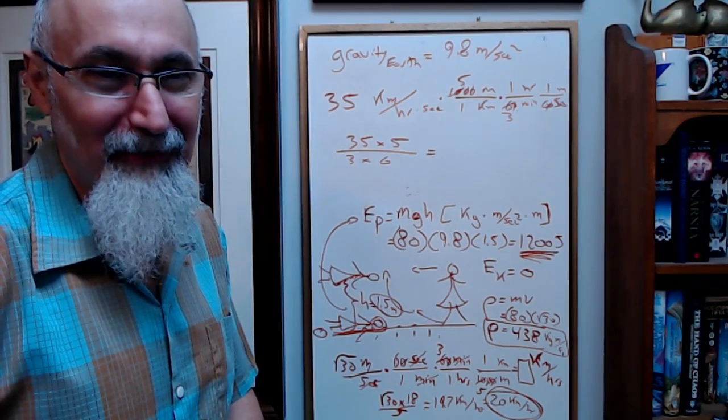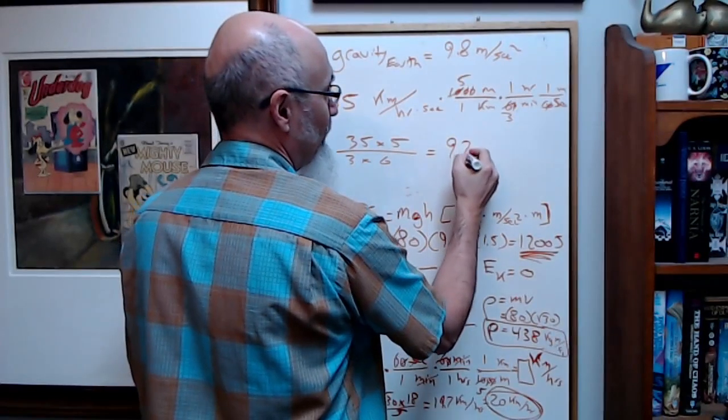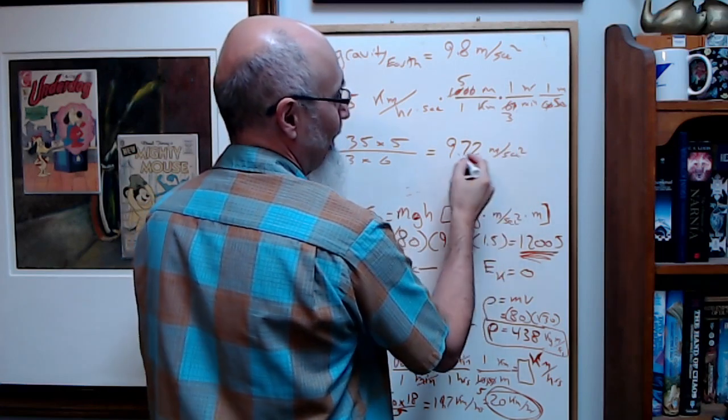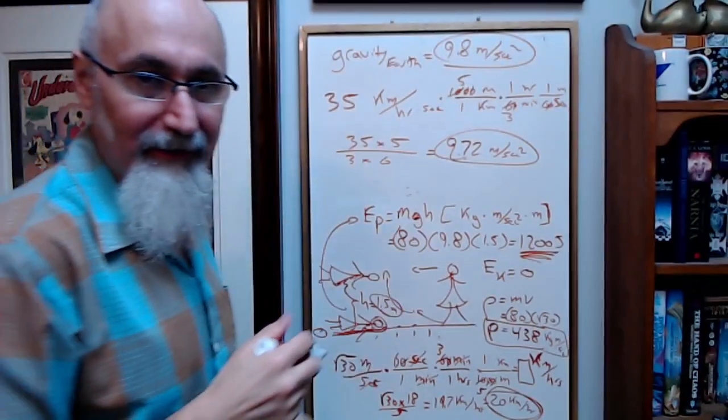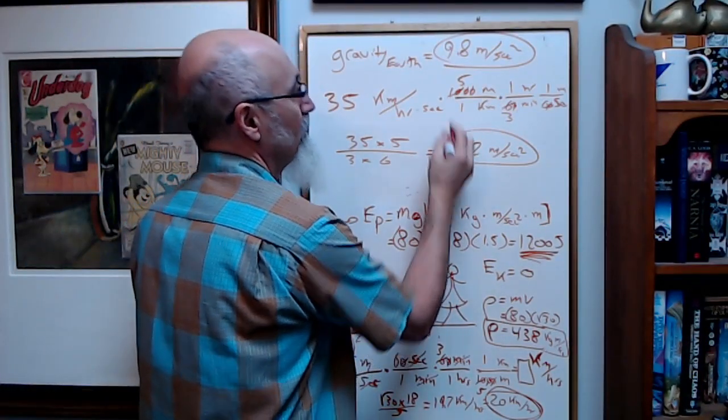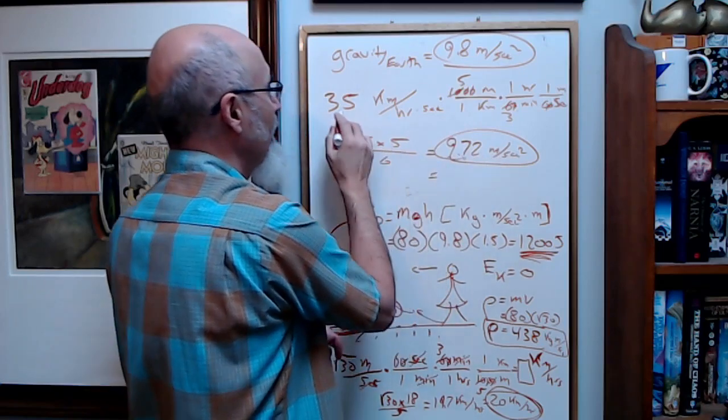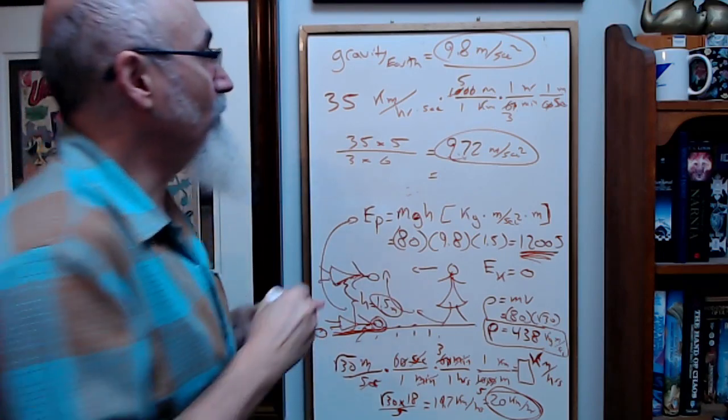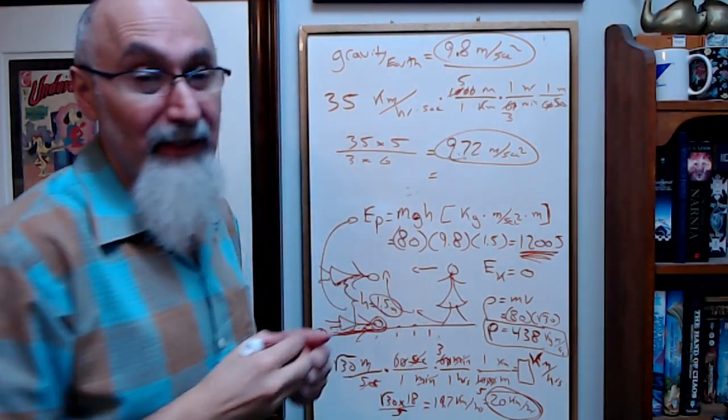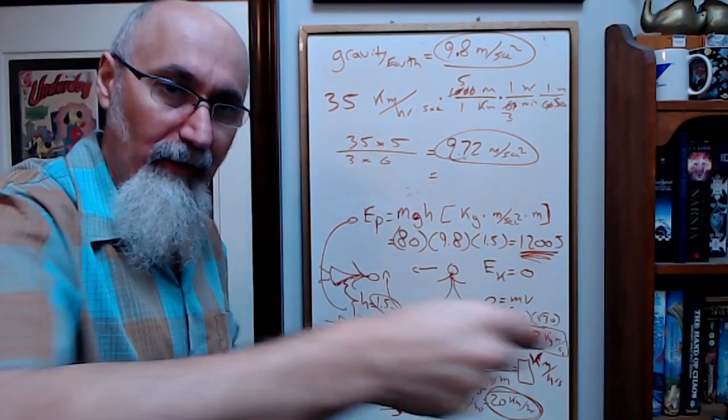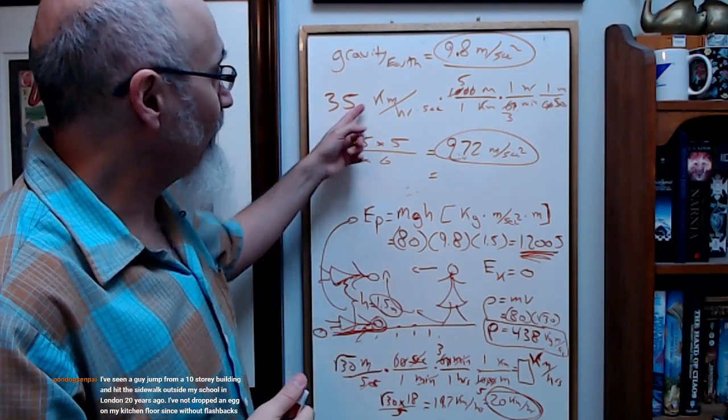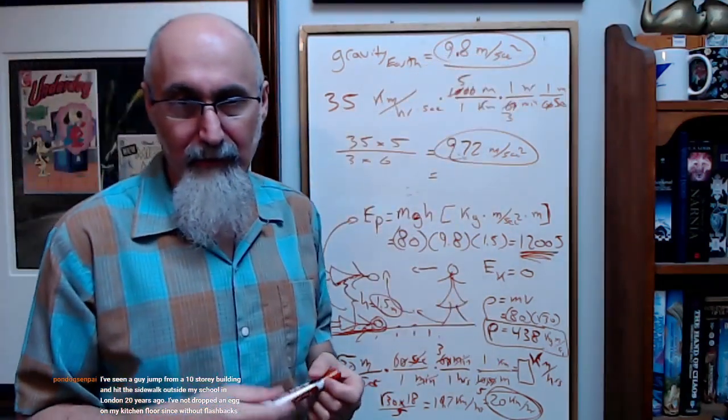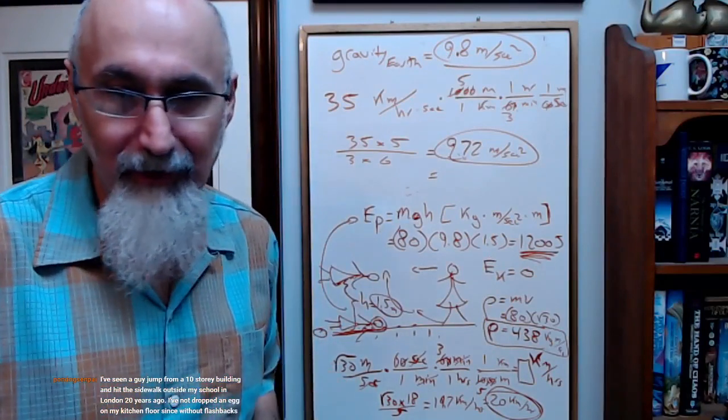It comes out to 9.72 meters per second squared. Based on our error and rounding, that's gravity. So 9.8 meters per second squared is the same as 35 kilometers per hour per second. Elder God, what they're talking about is acceleration. Someone is accelerating at 9.8 meters per second per second. So 35 kilometers per hour per second is equivalent to 9.8 meters per second squared, which is 1g.